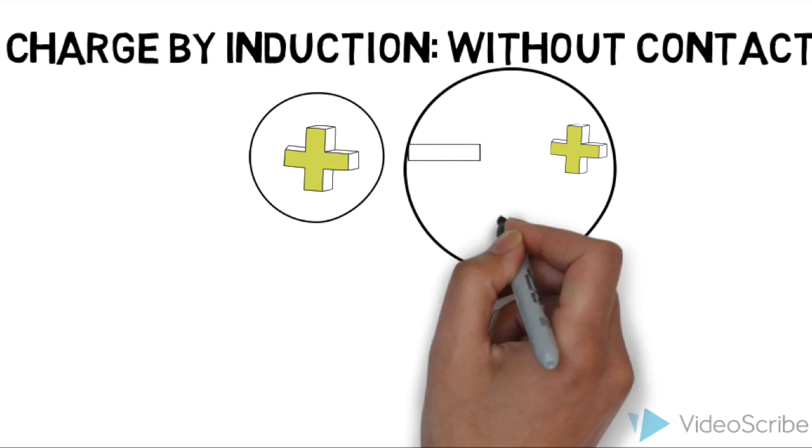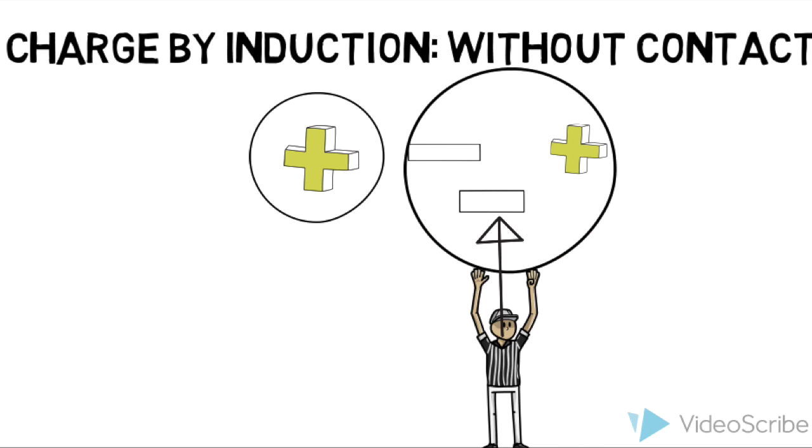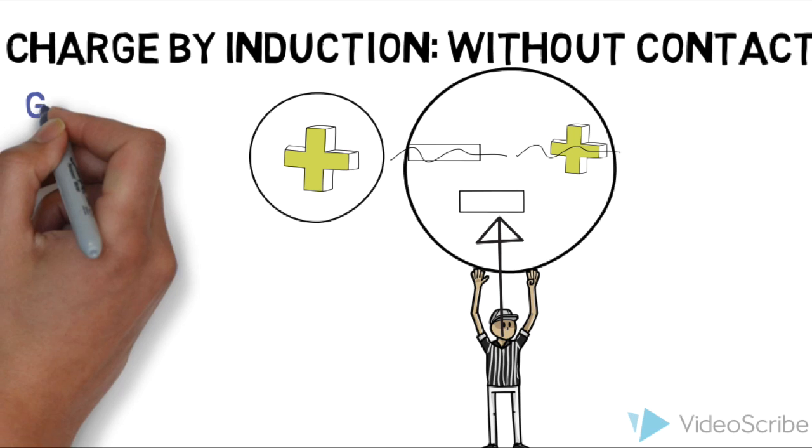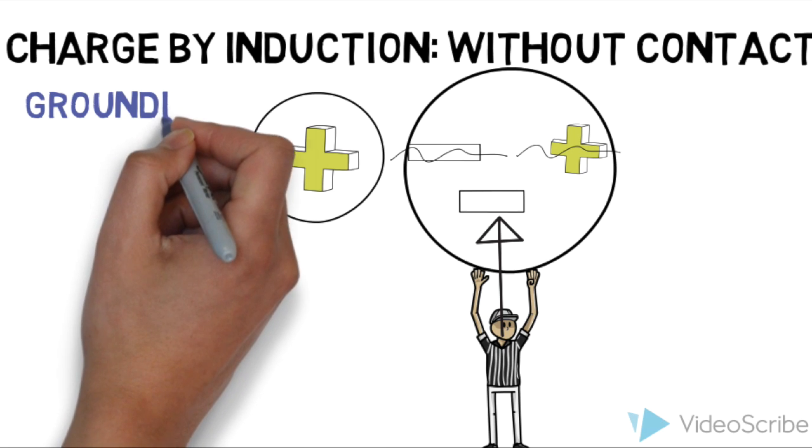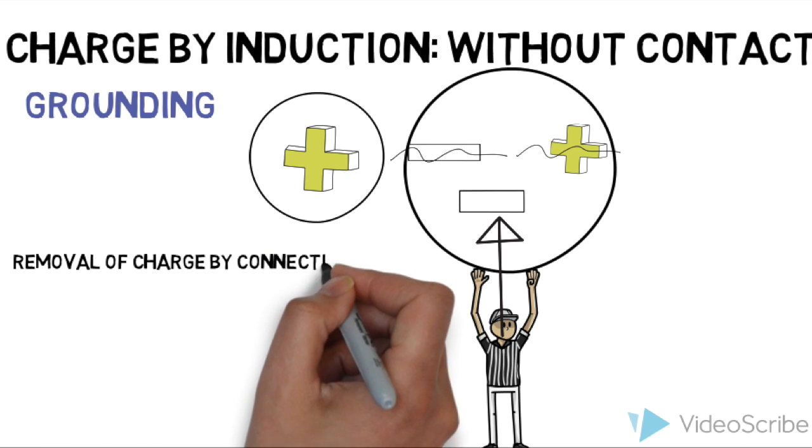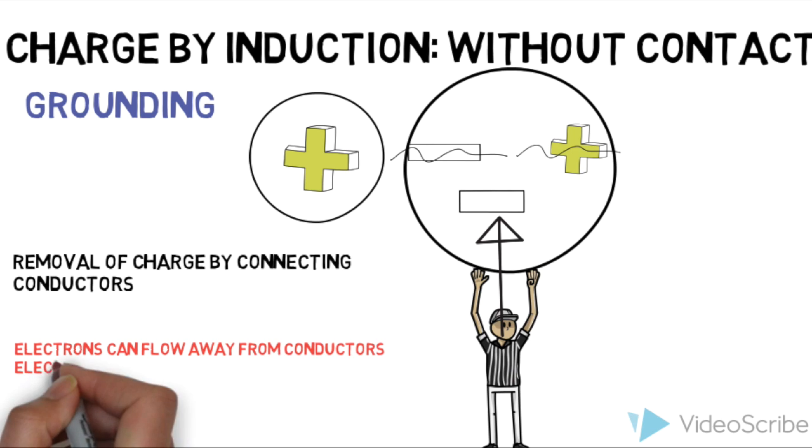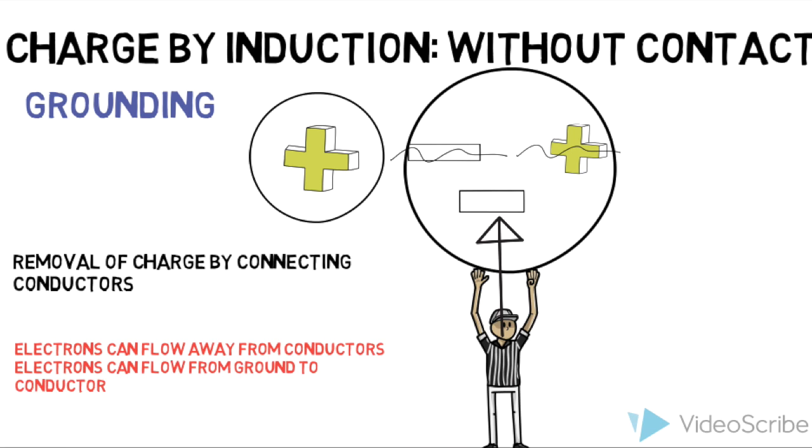Now I am going to touch the sphere. As I touch the sphere, electrons will travel from my body to the sphere to rid away the positive charges on that sphere. The sphere is now negative. This is called grounding. Grounding is the process of removing charge by providing a conductive pathway between conductors. Electrons can flow away from the conductor and electrons can flow towards the conductor.